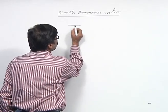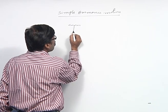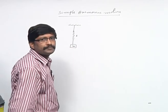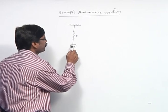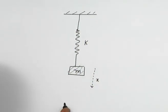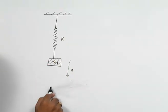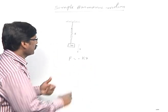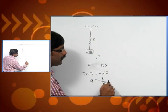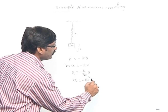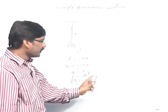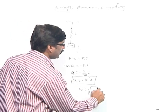Earlier we discussed the spring-mass system, where a spring of constant k is connected to mass M. If you give a small displacement x, we calculated the frequency. We know that F is equal to minus kx and F is equal to ma, so acceleration a is equal to minus k by M. Therefore, a is equal to minus omega squared x, where omega is the square root of k by M.